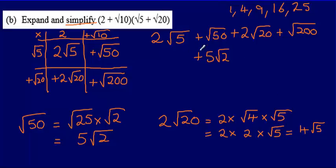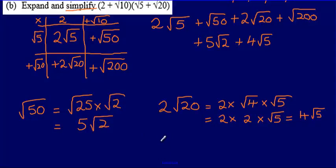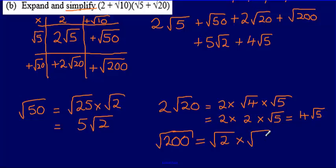And the square root of 200 also has a square number as a factor. I can write this as the square root of 2 multiplied by the square root of 100. The square root of 100 is 10, so this is the same as 10 root 2.